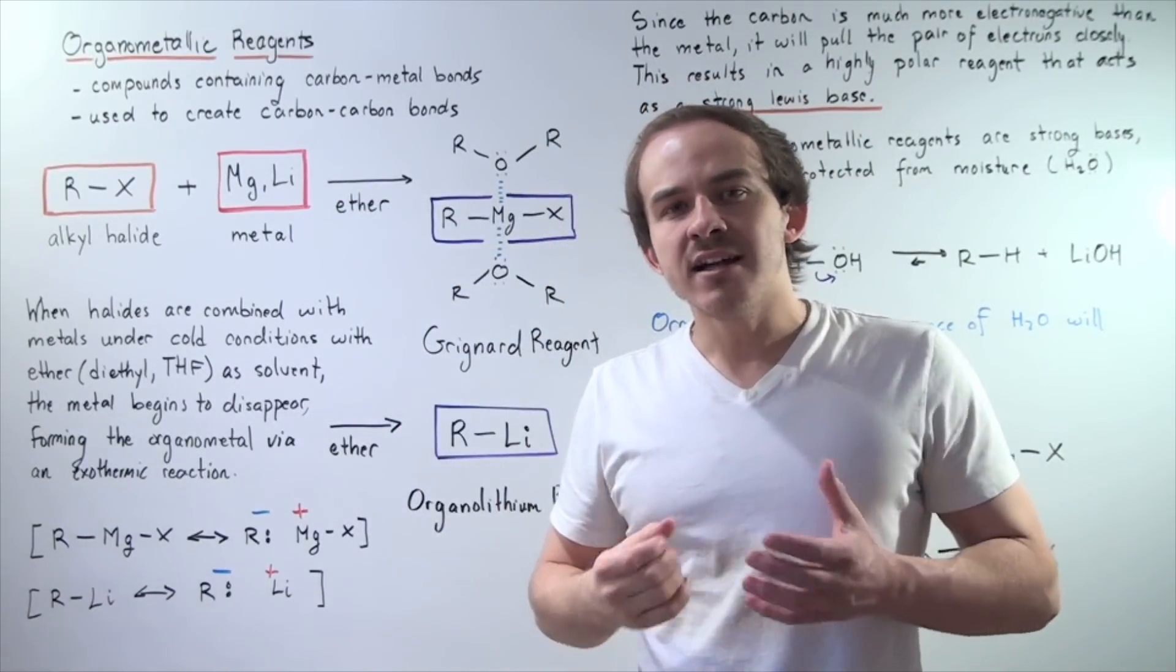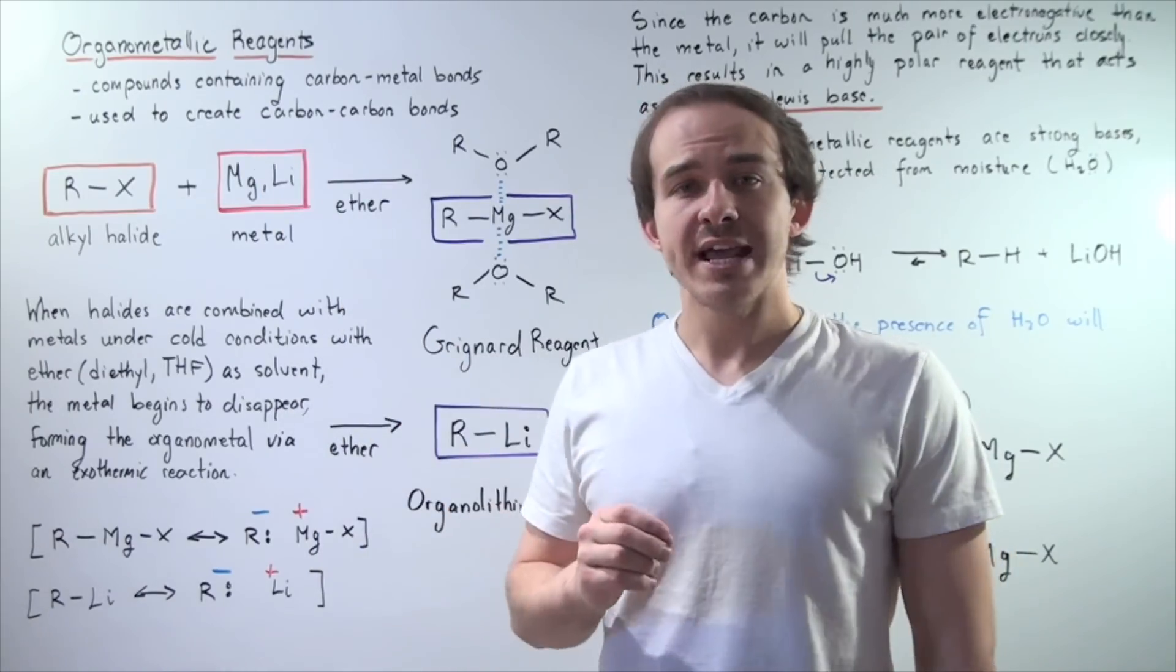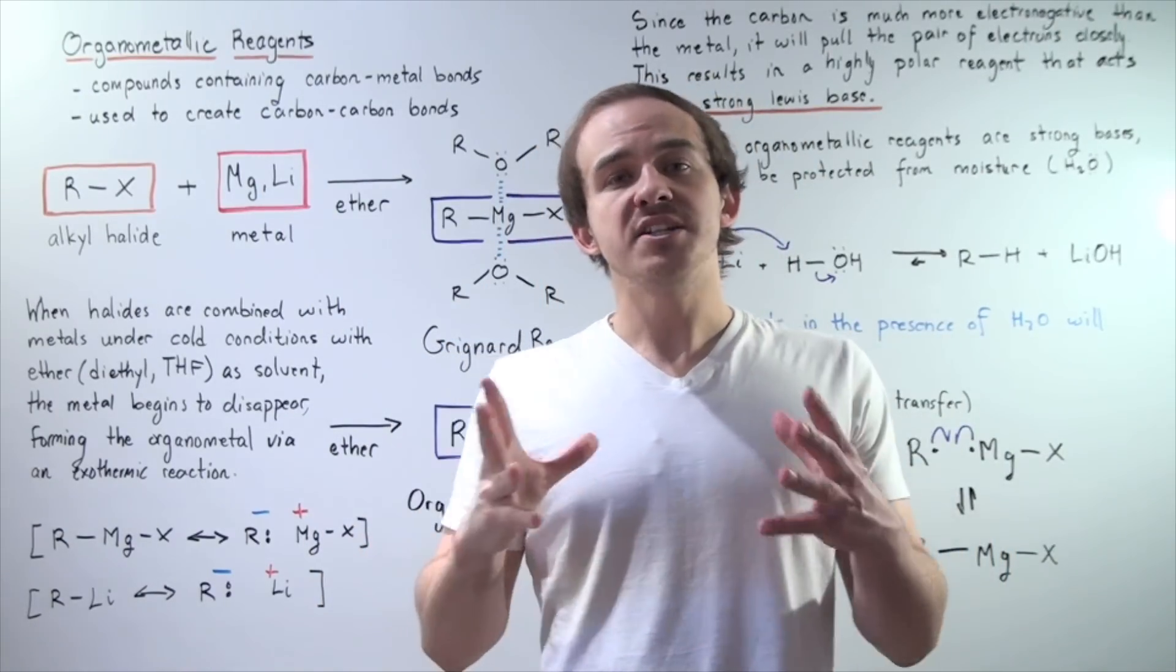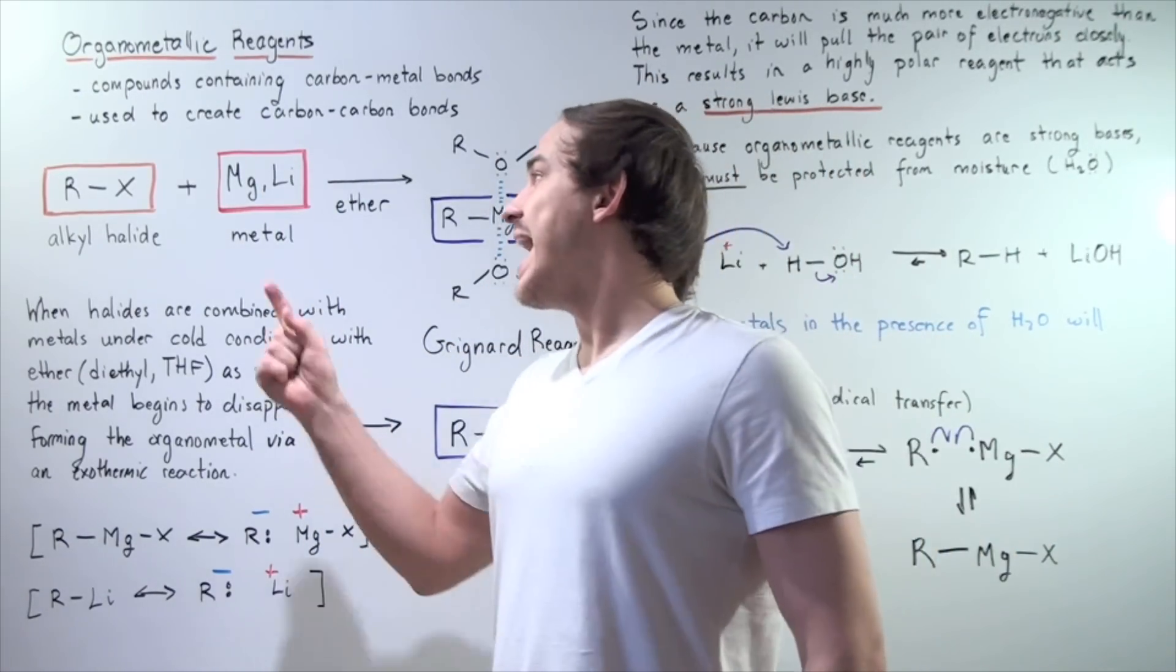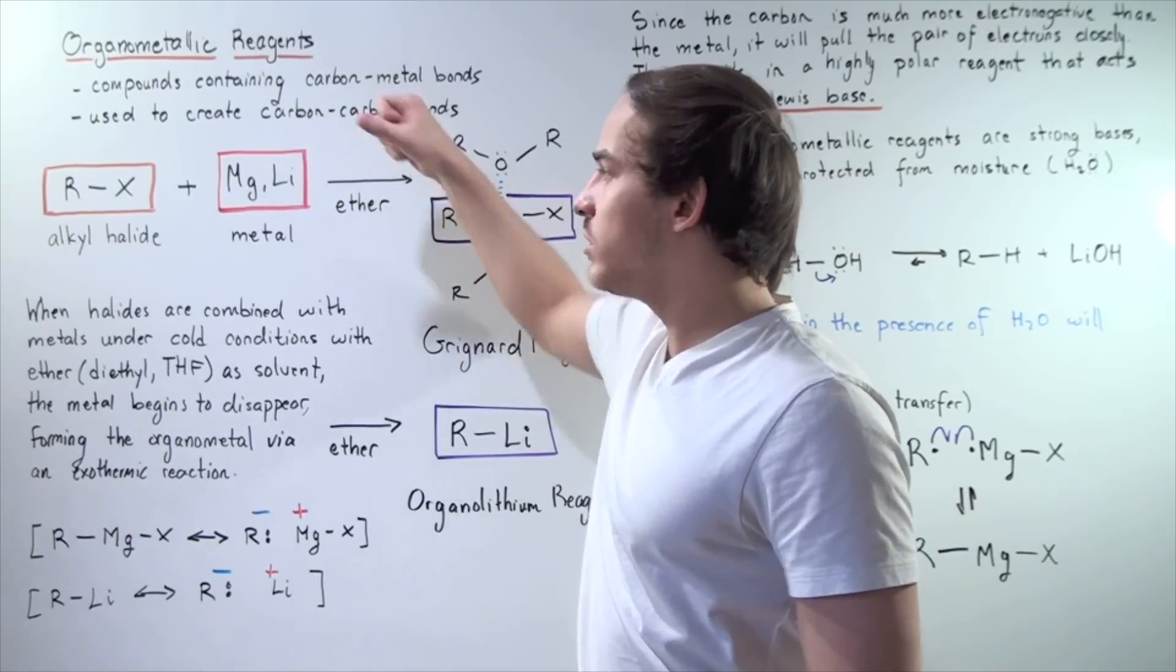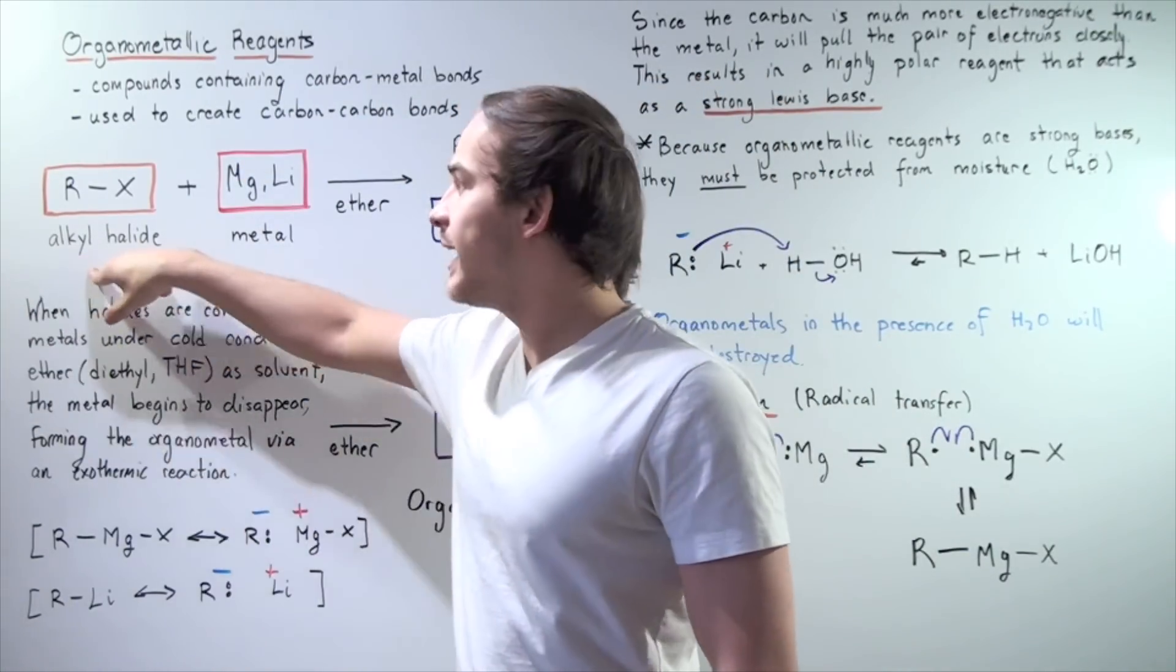So how exactly does one produce an organometallic reagent? Well, two things must be mixed, two compounds. A metal must be used, either magnesium or lithium, and an alkyl halide.